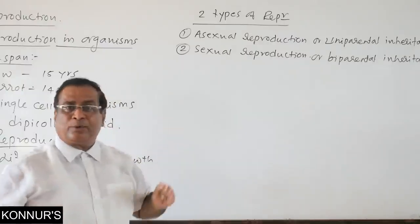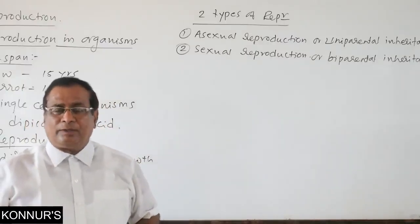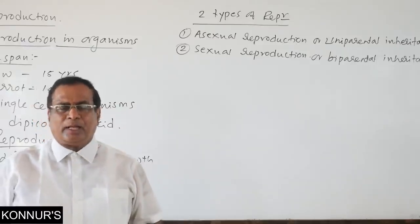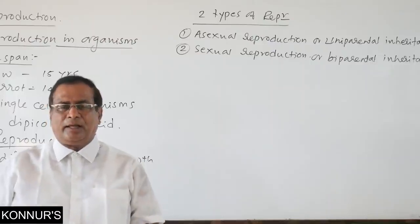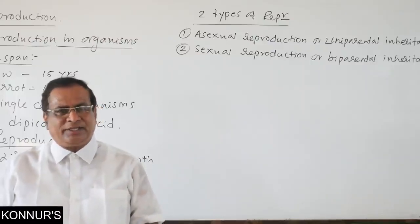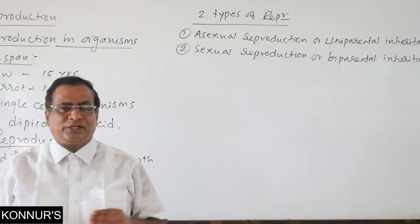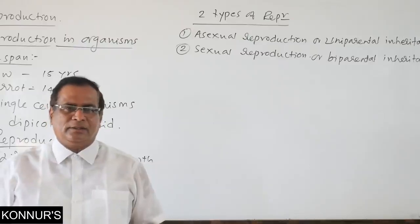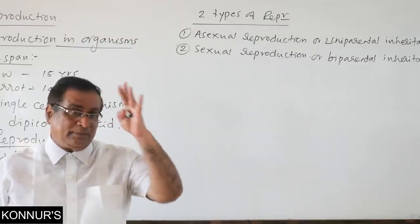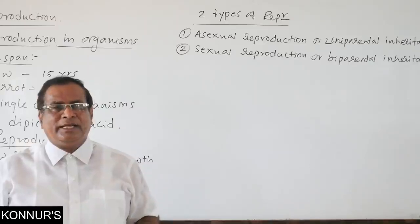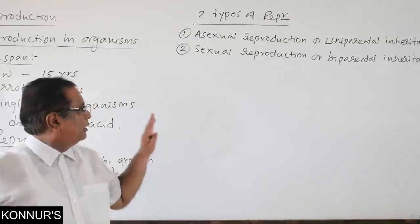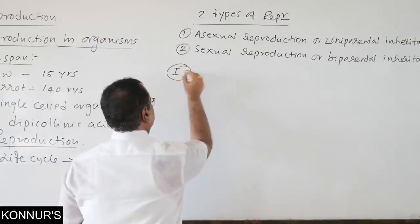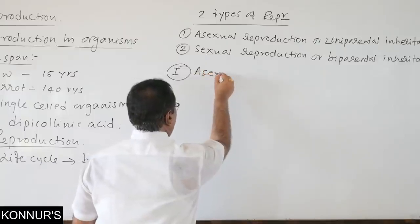The type of reproduction depends upon the habitat of the organism and their internal physiology and many other factors. Habitat means the natural abode of the plant, and habit means the nature of the plant. Now let us discuss asexual reproduction.